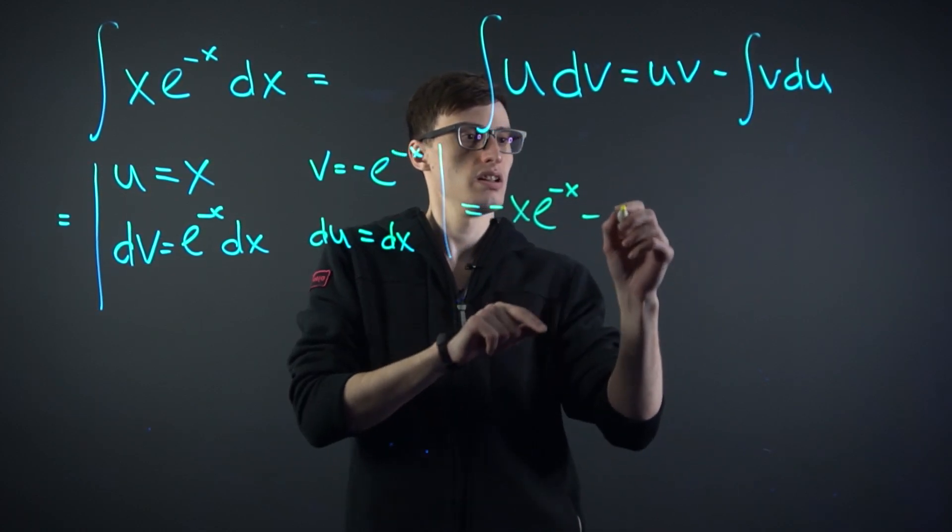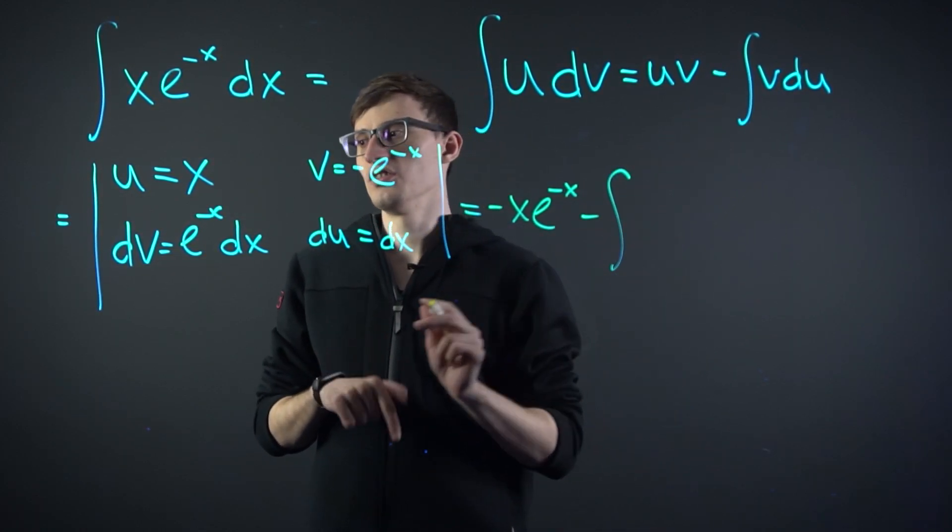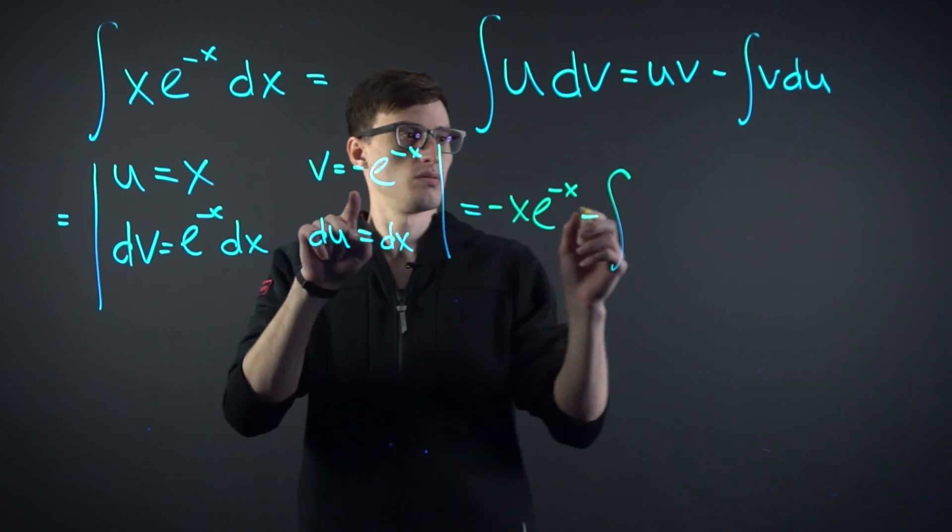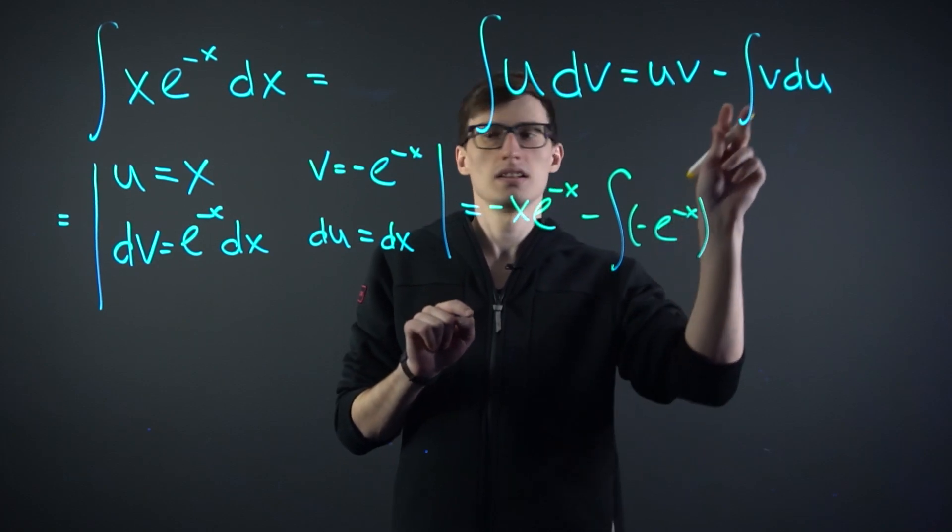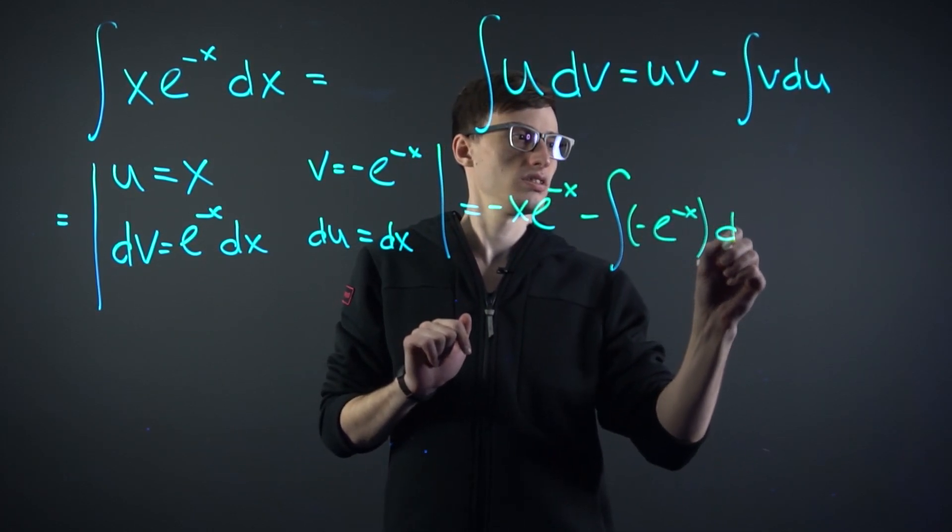minus the integral of v du. And v is minus e to the minus x times du, which is just dx.